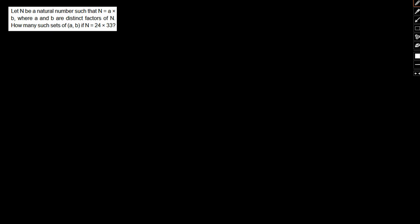With that being said, let us focus on the question in front of us and try and solve the same. Let N be a natural number such that N equals a times b, where a and b are distinct factors of N. How many such sets of a and b if N is 24 times 33?